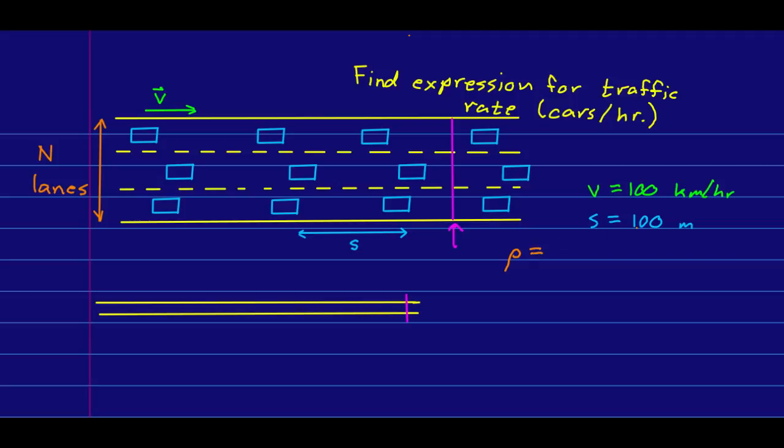More useful than the separation between cars would be something that we might call a car density. And so, let's just say, if there were a hundred meters between cars, then the car density would be 10 cars per kilometer in one lane.